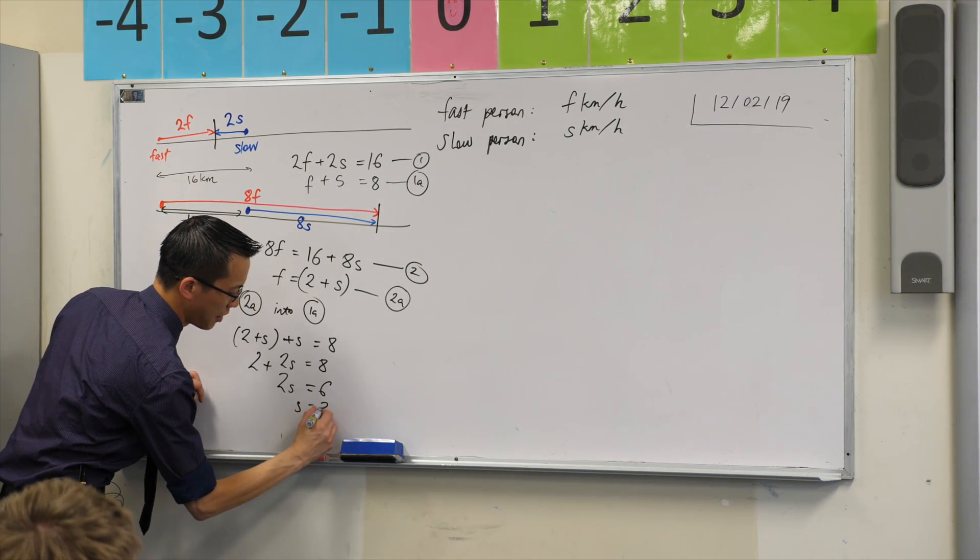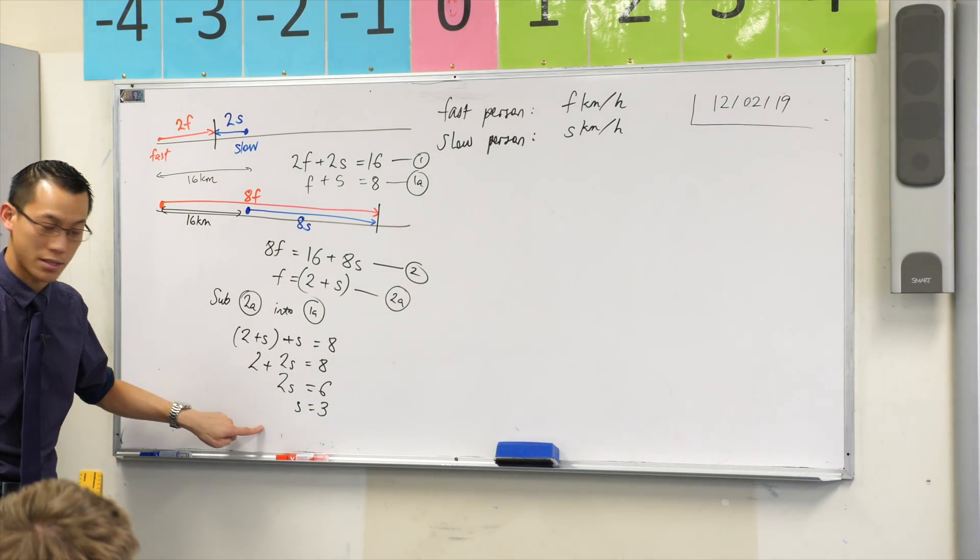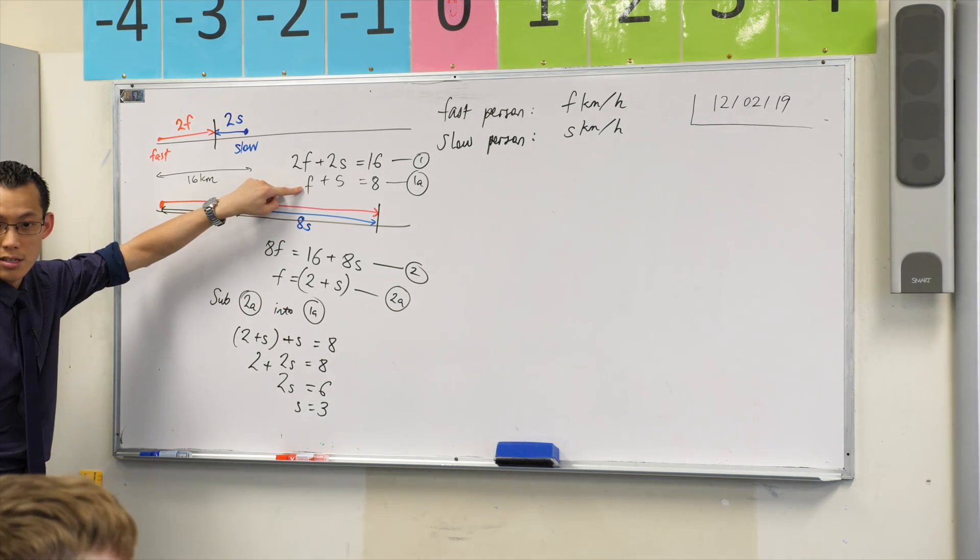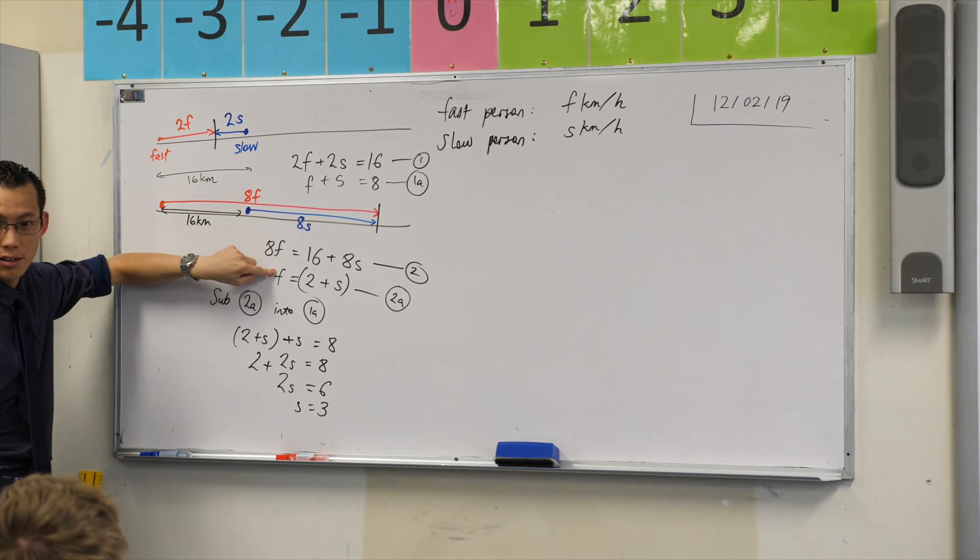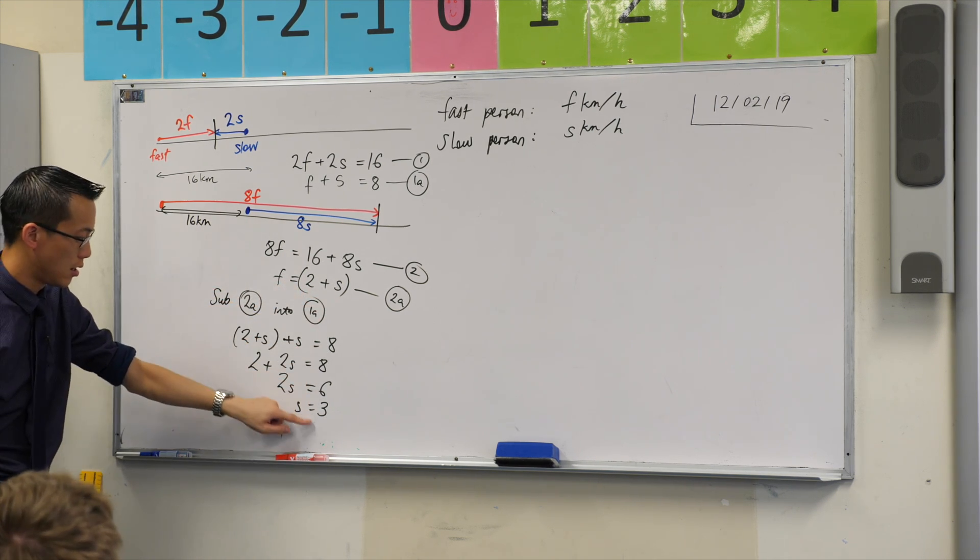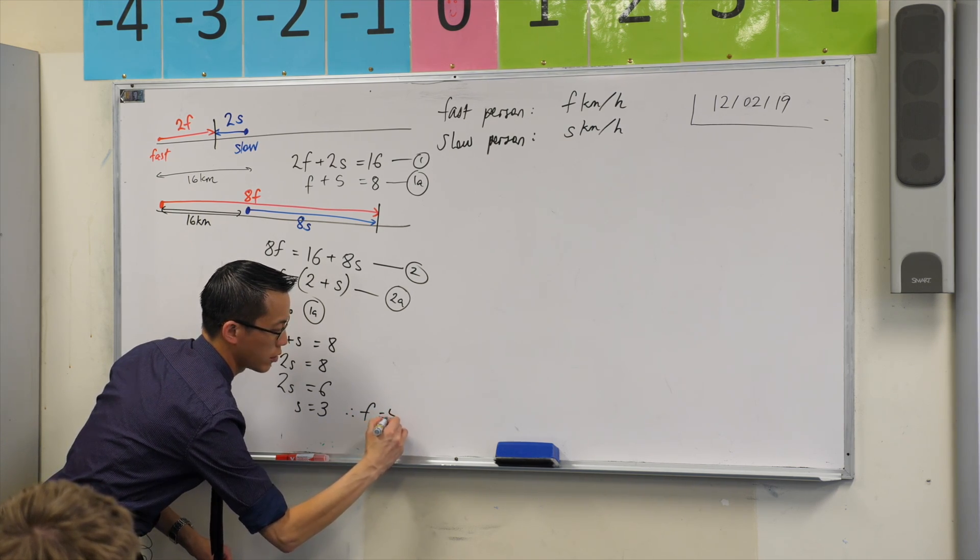And so now I'm sort of there. So this is apparently the speed of the slow person. So if that's three, what would you, if you look at an equation like this, what's f or this one even? f is going to be 2 plus the slow person's speed, which is five. So therefore f = 5.